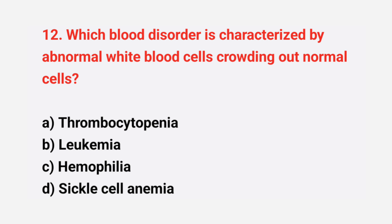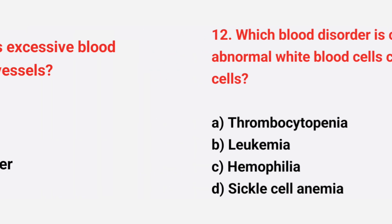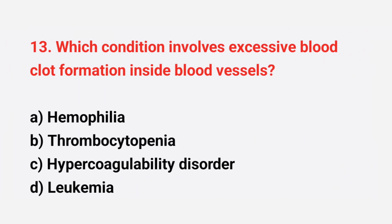Question number 12: which blood disorder is characterized by abnormal white blood cells crowding out normal cells? The right answer is option B, leukemia.